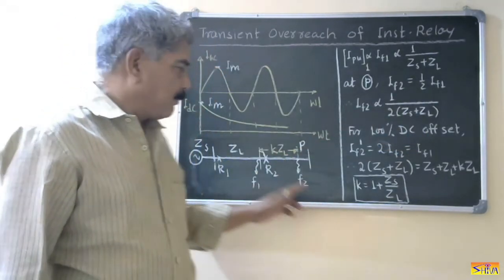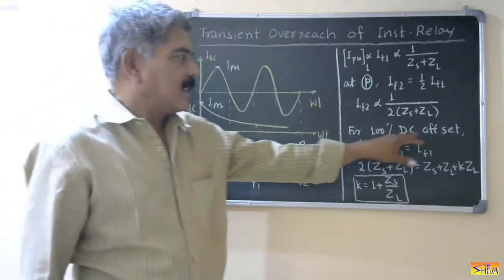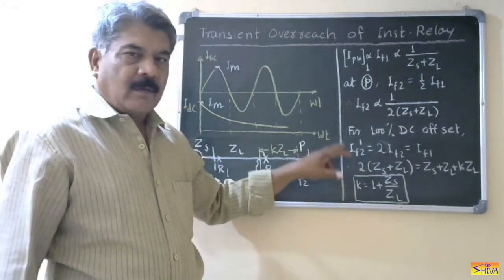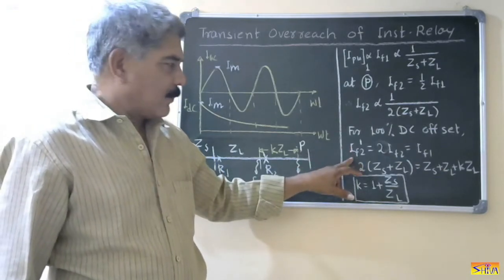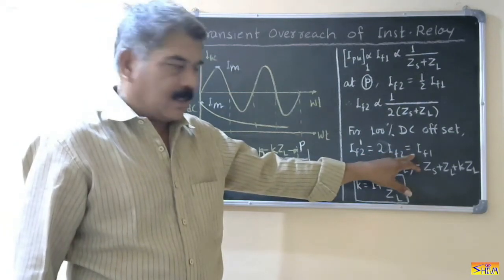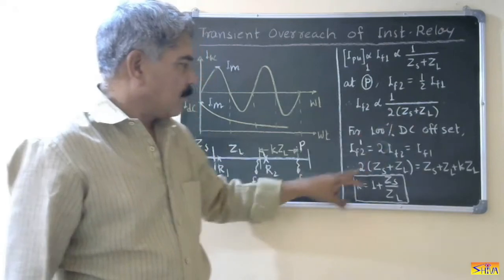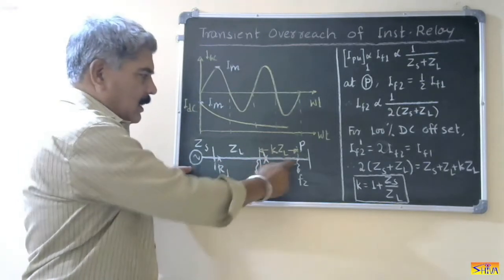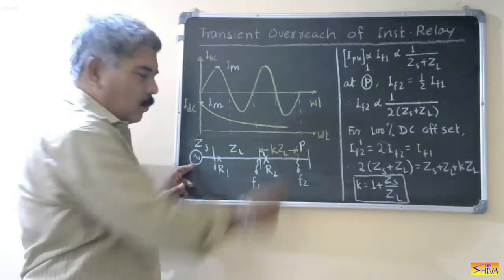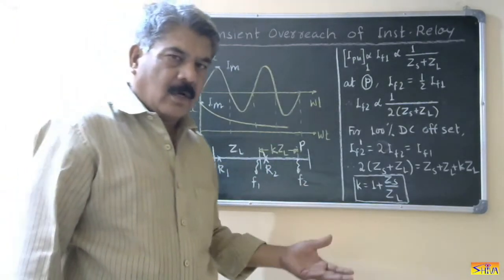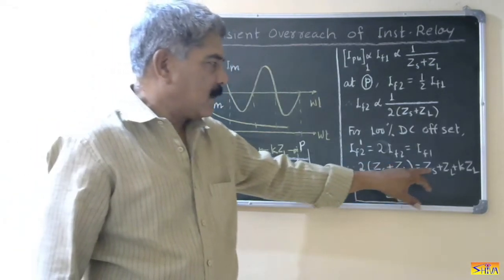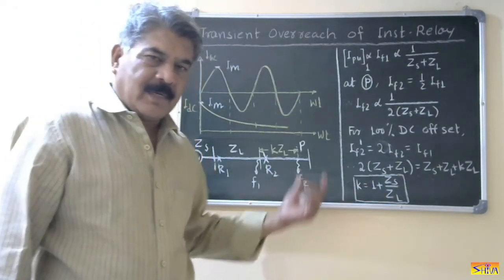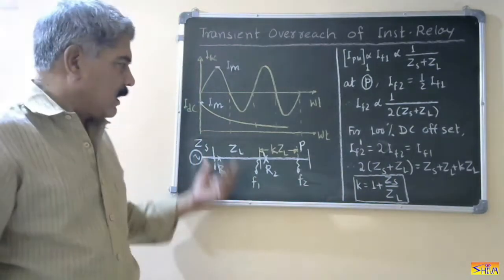Now consider the worst condition: fault takes place at P with 100% DC offset. With 100% DC offset, IF2 with DC offset becomes 2 times IF2, which equals IF1. Comparing: 2 times (ZS + ZL) equals ZS + ZS + ZL + K times ZL, which is the total distance from source to point P. Solving, K equals 1 plus ZS upon ZL. This K represents the transient overreach of the instantaneous relay.